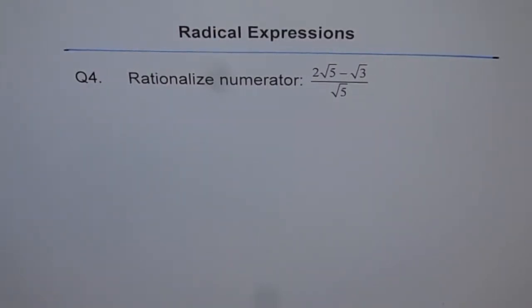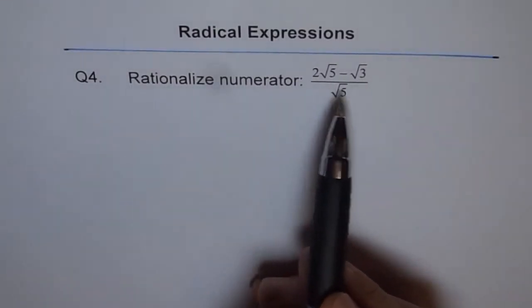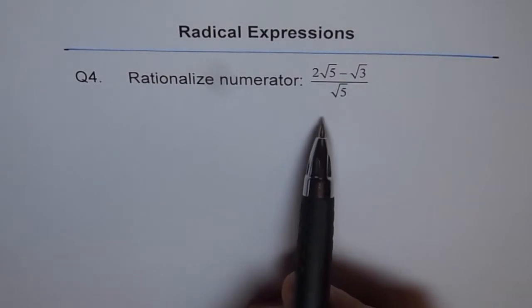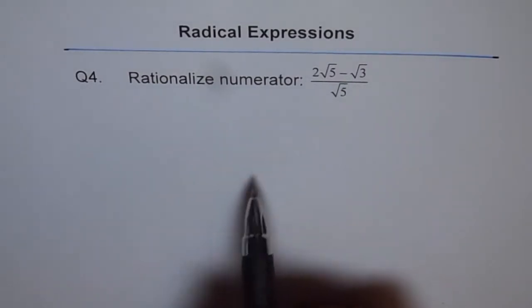Question 4. Rationalize the numerator of 2 square root 5 minus square root 3, divided by square root 5.